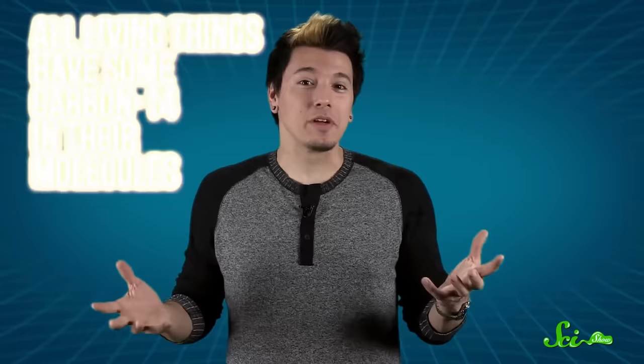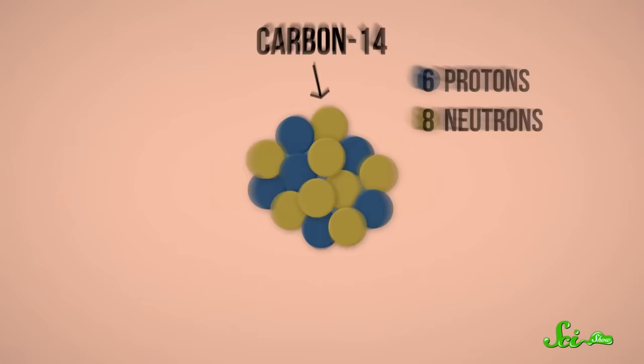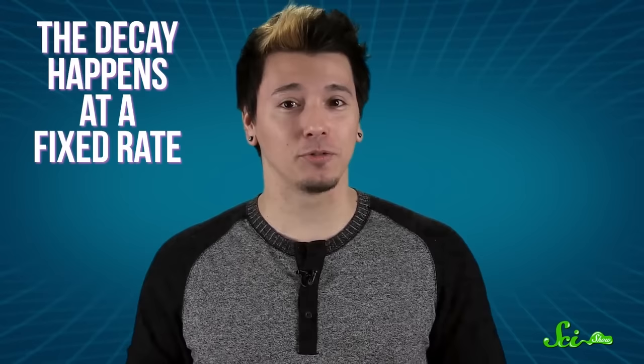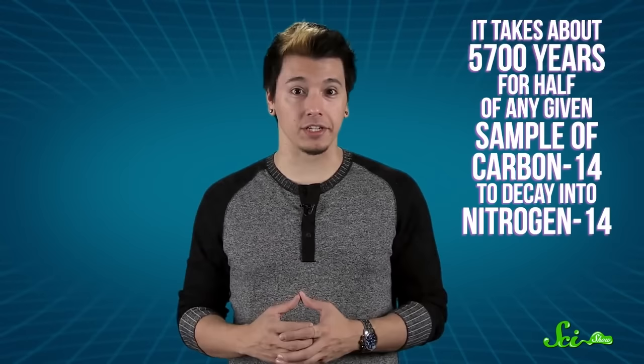But that carbon doesn't stick around forever, because it's not completely stable. At some point, it undergoes a process known as beta decay, in which it loses an electron, turns one of its neutrons into a proton, and becomes nitrogen-14. And luckily for scientists who specialize in studying old biological material, like archaeologists, this decay process happens at a fixed rate. We know that it takes about 5,700 years for half of any given sample of carbon-14 to decay into nitrogen-14.